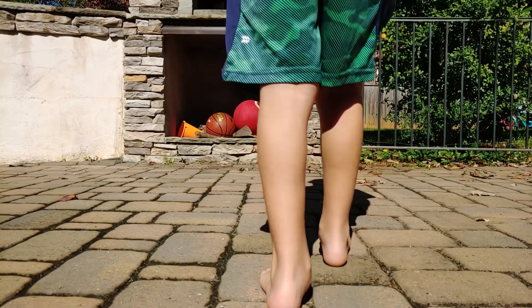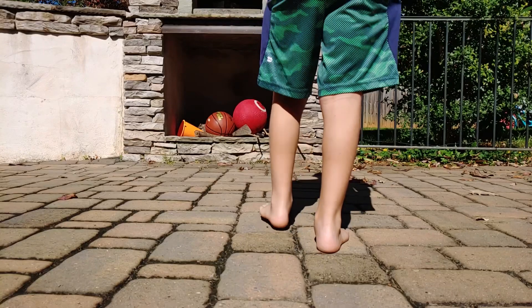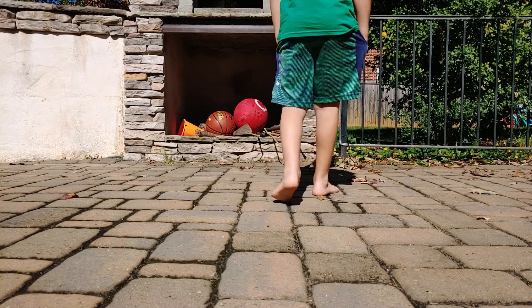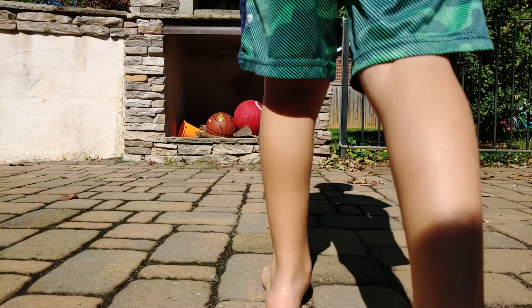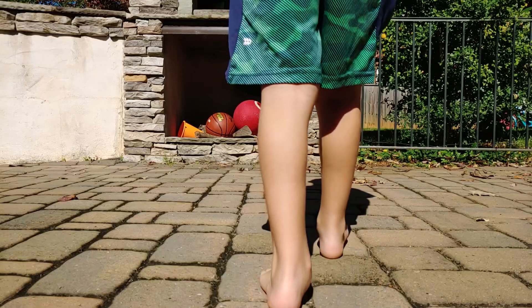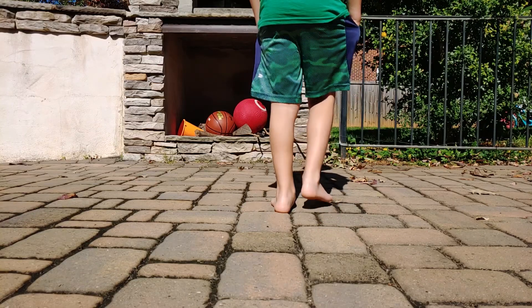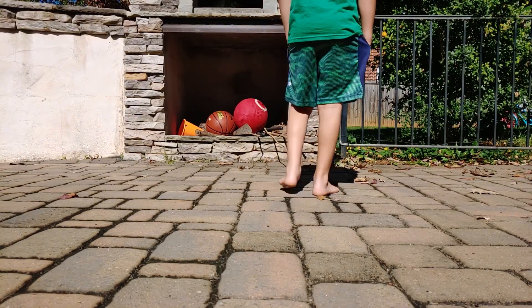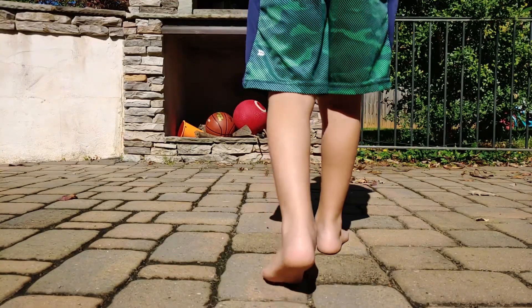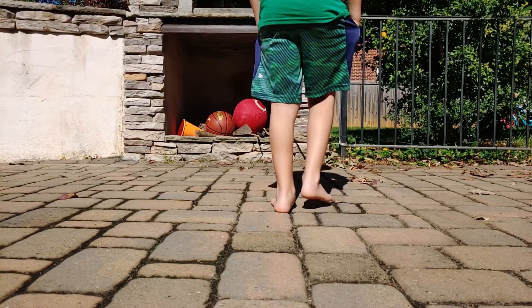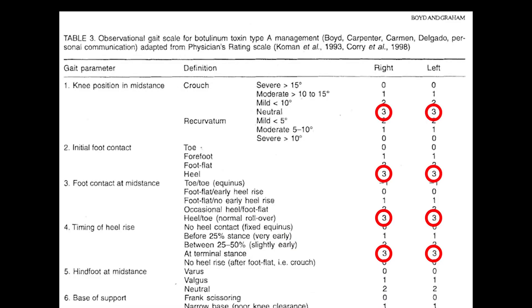The next one is the hind foot position at mid stance. As I watch the back of Sammy, you can see that his calcaneus is rolling in a little bit. In terms of severity of valgus, we only get one point either way — leaning in, leaning out, or neutral. Sammy rolls in a little bit but not severely, so I'm going to call him more neutral than significantly valgus. Valgus means his heel is rolling in; varus would be if his heel was rolling out. For the purposes of this, I'm going to call him neutral.